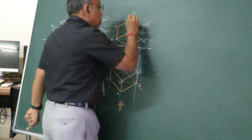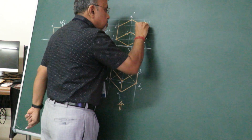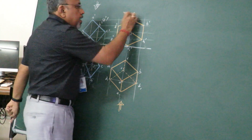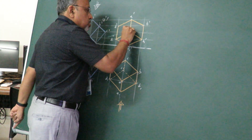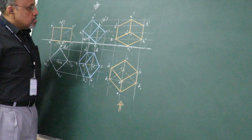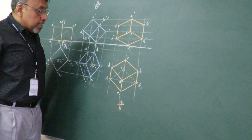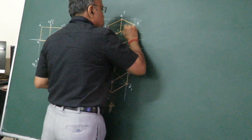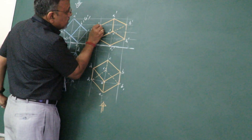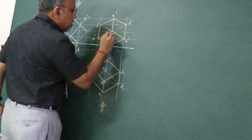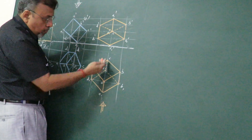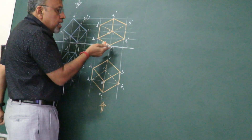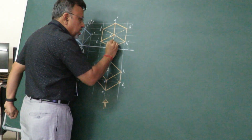Edge A-A is nearer to the observer and is a solid point, so it is visible. For the other base A, B, C, D: A-to-B is visible, B-to-C cannot be seen so it is dotted, C-to-D is also dotted. Edge C-C is farthest from the observer and C-dash is invisible, C1 is visible, so the result is dotted.